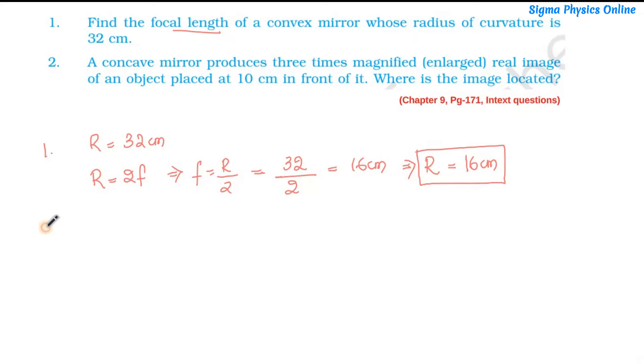Let's solve the second question. A concave mirror produces three times magnified real image of an object placed at a distance of 10 cm in front of it. Where is the image located? We have to find out the image distance, that is V. Let's write down what is given.